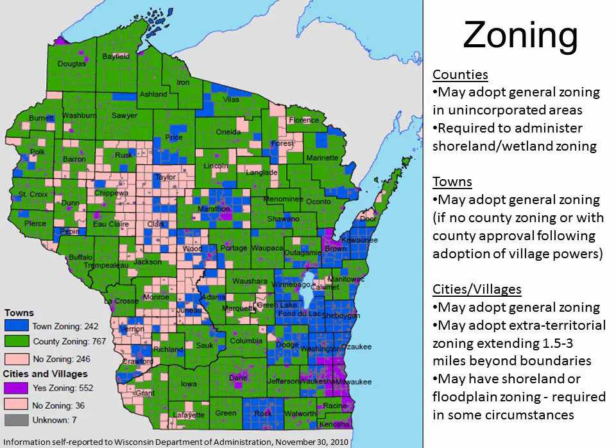Towns also have authority to approve or disapprove of subsequent zoning amendments that affect the town. Towns that choose not to participate in county zoning may adopt their own zoning ordinance with county approval, or remain unzoned. Shown on this map in green, blue, and pink respectively are the number of towns that participate in county zoning, that have their own town zoning, and that are unzoned.